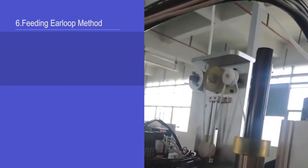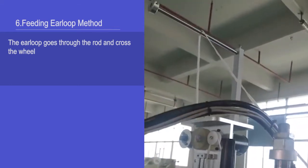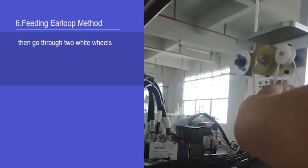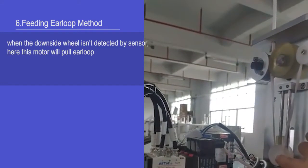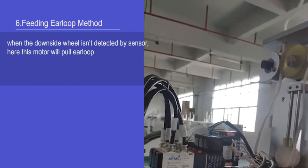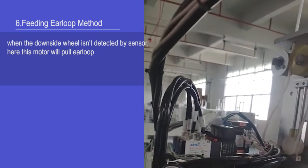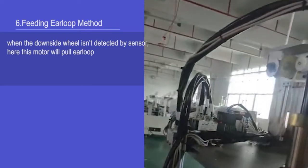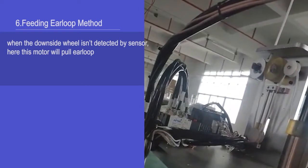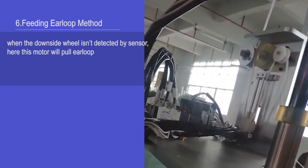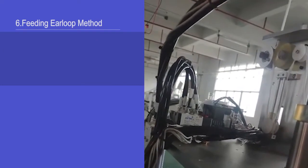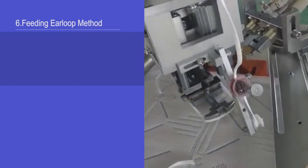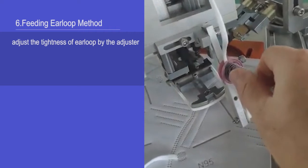Feeding air loop method: the air loop goes through the rod and crosses the wheel, then goes through two wide wheels. When the downside wheel isn't detected by sensor here, this motor will pull air loop. Adjust the tightness of air loop by the adjuster.